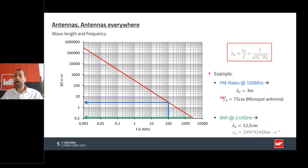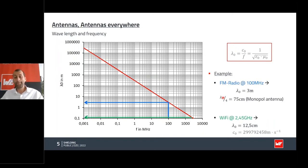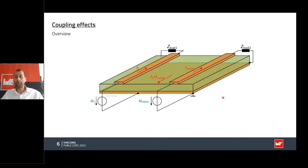If you increase the frequency — take Wi-Fi at 2.45 GHz — the antenna size is reduced. Lambda would be 12 centimeters, and divided by four is about three centimeters. You are already at circuit board scale, and a lot of antennas can be found there. Shielding is therefore a good approach to reduce those effects.